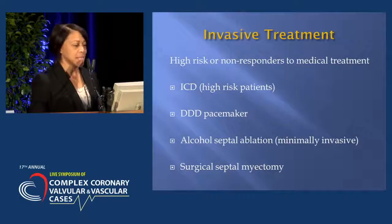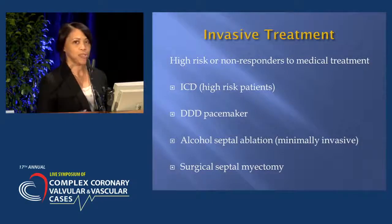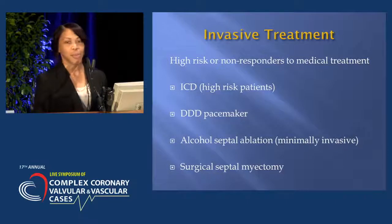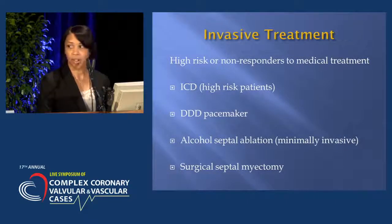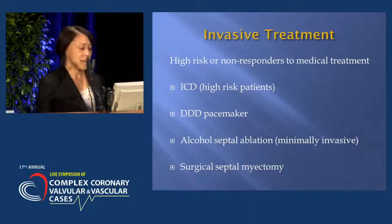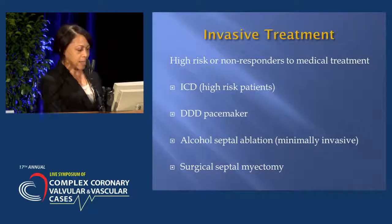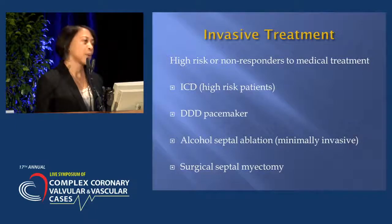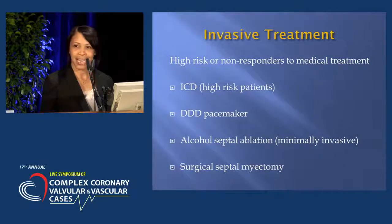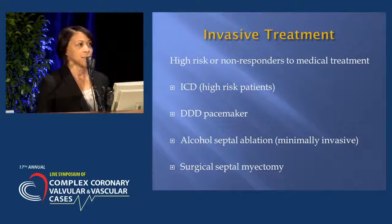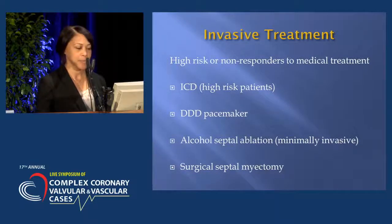There are invasive treatment options. One is the ICD, which is reserved for high-risk patients for primary prevention to prevent sudden cardiac death. There's also a dual-demand pacemaker, which is supposed to offset the conduction of the heart — it's usually used as adjunct therapy rather than primary prevention. Additionally, there's alcohol septal ablation, which is minimally invasive, and surgical septal myectomy.